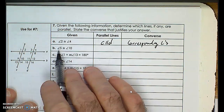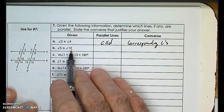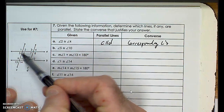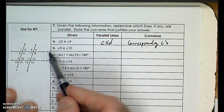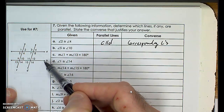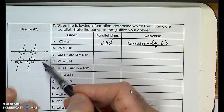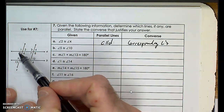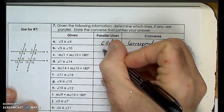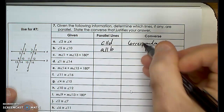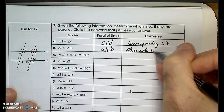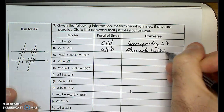Given angle 5 and angle 10 are congruent: these come from two intersections that cross over lines A and B using one transversal. Angles 5 and 10 are alternate interior angles with respect to lines A and B. Since they're congruent, A and B are indeed parallel by the alternate interior angles converse.